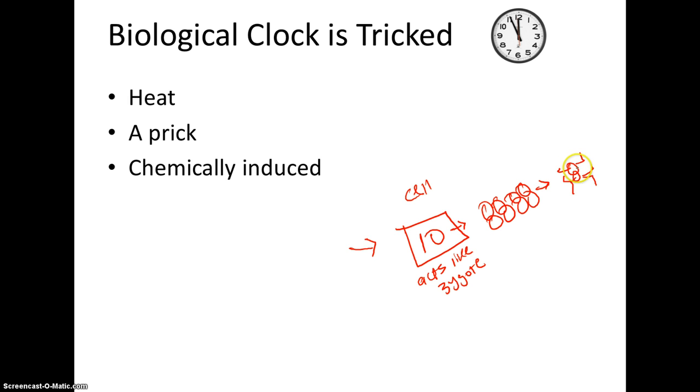And this biological clock is tricked by heat, so heat meaning sunlight. Or it could be pricked by something like the egg could be pricked by something like a needle or a thorn. Or it could be chemically induced by the cell itself. And it would activate this replication. So the cell then reproduces and we have our insect.